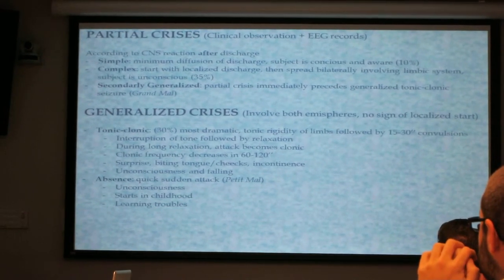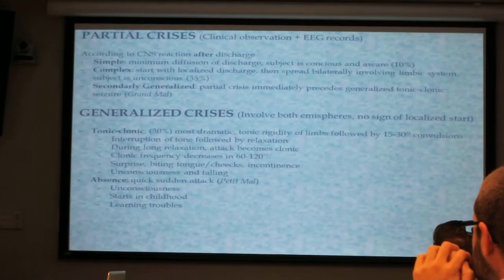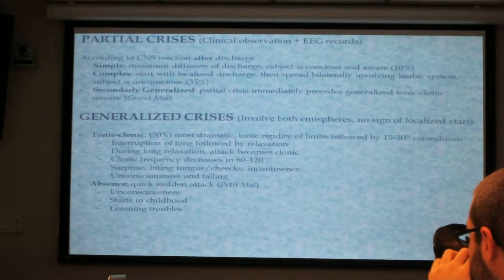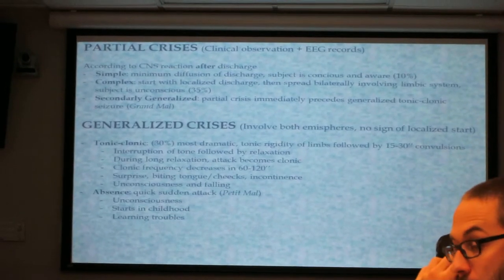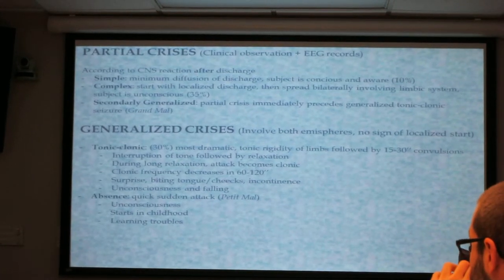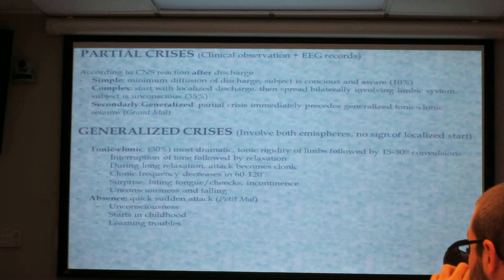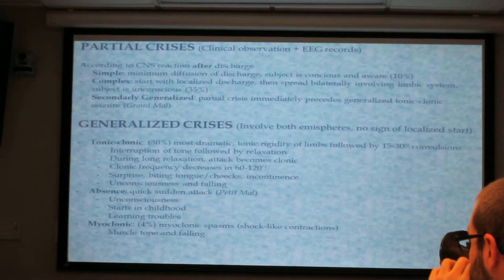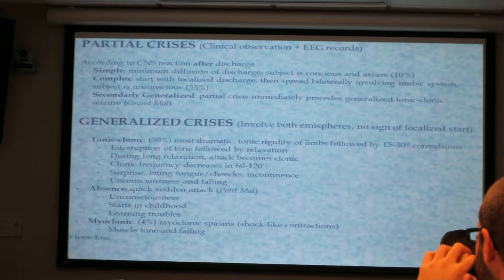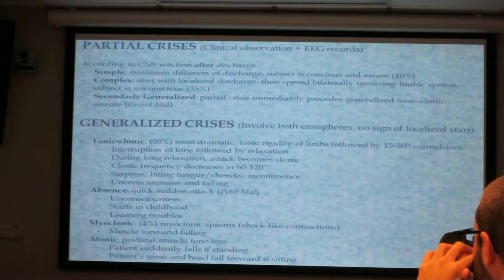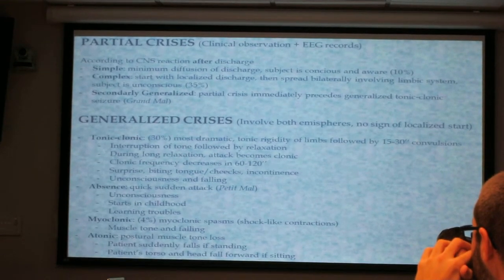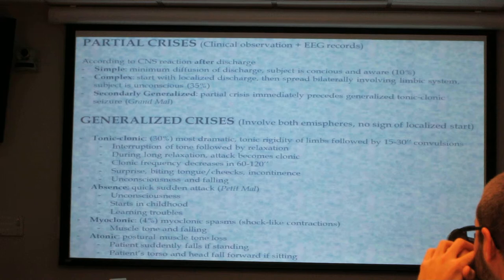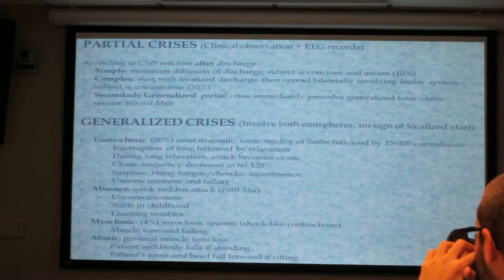Absent seizures, also known as petit mal, occur when the patient loses consciousness briefly during a quicker epileptic attack. They can start in childhood and are usually associated with learning troubles. Myoclonic seizures involve myoclonic spasms, but only a very small part of the population is affected. Atonic seizures are those in which the patient loses muscle tone while walking and falls down; if sitting, you will see the patient bend over.